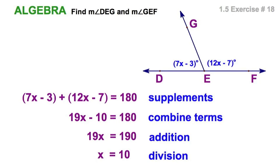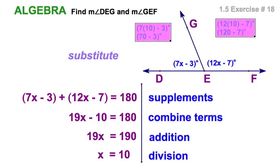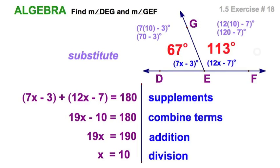But that gives us the value for x. If I want to find out what the individual angles are, then it's time to substitute. When I substitute, it's going to look like this. Take each of these expressions, replace the value of x, and I can work that out. Certainly, I'm going to come up with these two measurements.